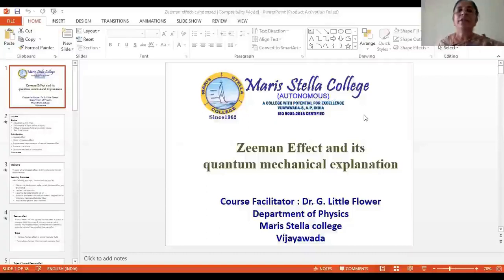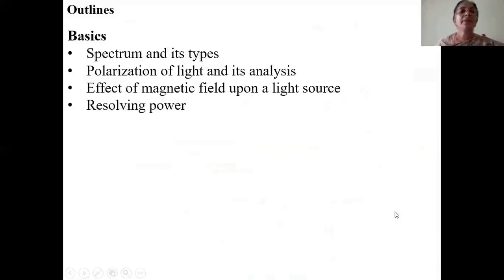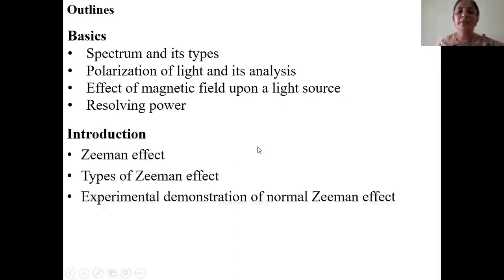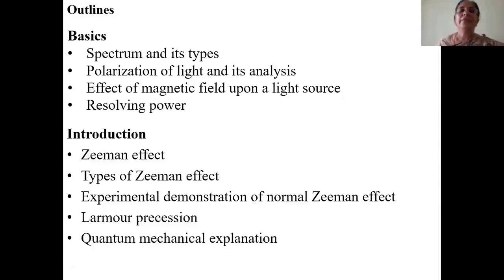Hello viewers. Today let us discuss Zeeman effect and its quantum mechanical explanation. The outlines of this talk would be: what is spectrum and its types, what is polarization of light and its analysis, effect of magnetic field upon a light source, what is resolving power, then we will introduce the Zeeman effect, types of Zeeman effect, experimental demonstration of normal Zeeman effect, Larmor precession, and finally the quantum mechanical explanation of Zeeman effect.